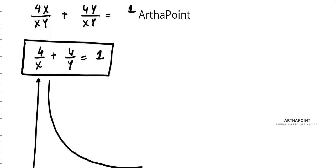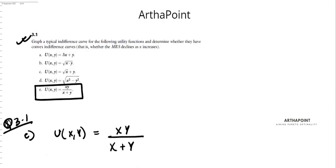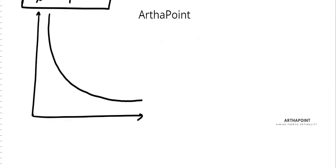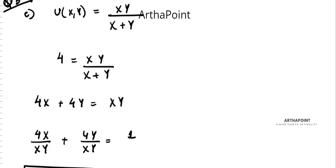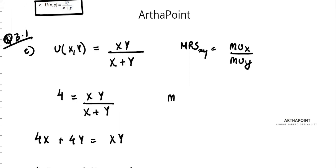What we want to go ahead and do is find if it has convex indifference curves or not. Just by this I can tell you that this is convex, but let's go ahead and find the MRS. MRS will be MUx by MUy.